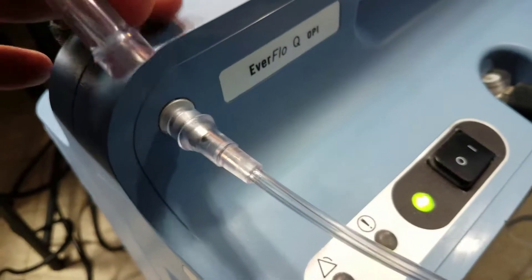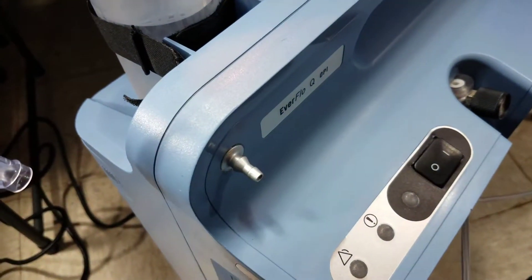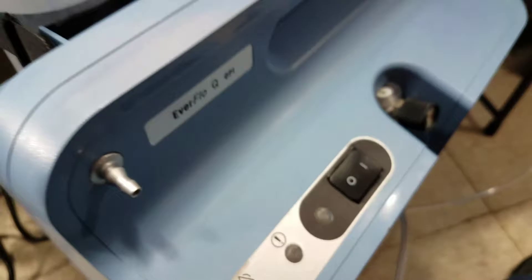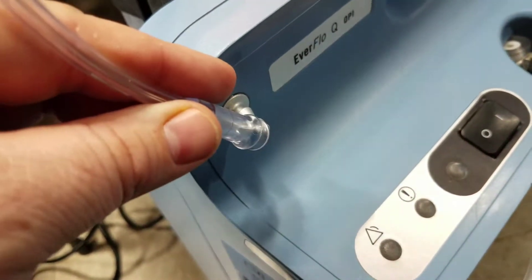Okay, so one important thing to note is make sure your concentrator's turned off before you try to do this. The little short tube that you're seeing running from the humidifier is gonna hook into the output of your oxygen concentrator. Make sure you push that on there snugly.